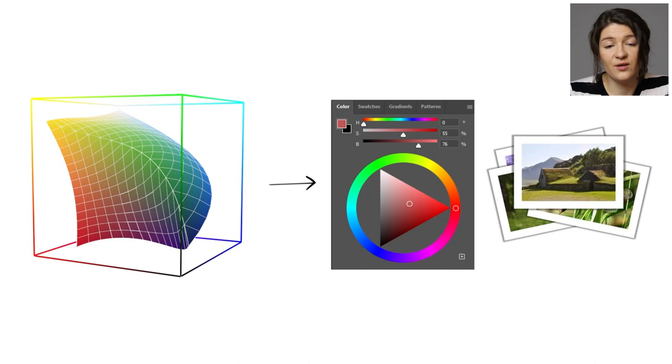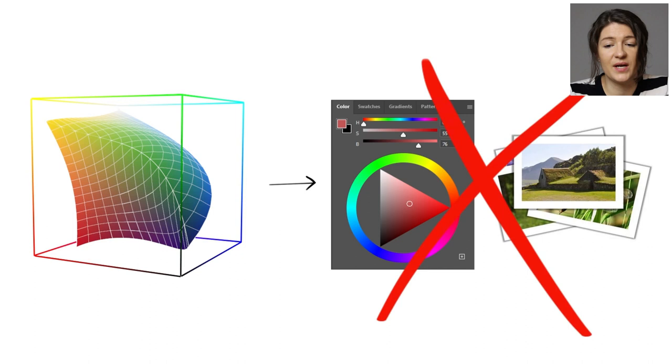On top of that, working with Kubelka-Munk means limiting the color gamut only to colors that can be mixed from pigments. And some RGB colors can't be mixed from any real pigments. That means that we cannot use the RGB picker that everybody is used to. And it also means that we can't even load photographs and work with them. These are the reasons why nobody implemented natural color mixing in digital painting yet.